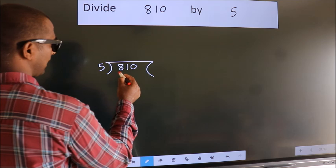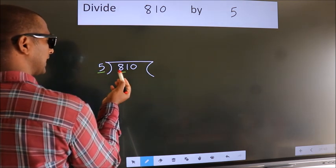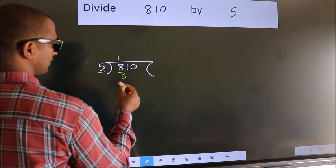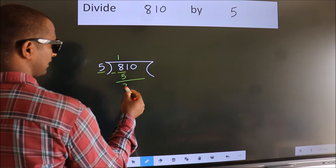Next, here we have 8, here 5. A number close to 8 in the 5 table is 5 once, which is 5. Now, we should subtract. We get 3.